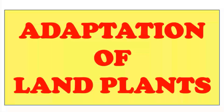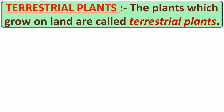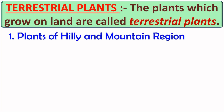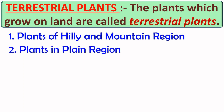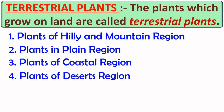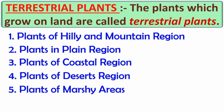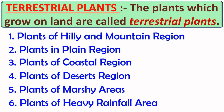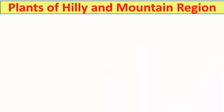First, we will see adaptation of land plants. Most of the plants grow on land and these are known as terrestrial plants. Terrestrial plants can be further classified into the following types: plants of hilly and mountain region, plants in plain region, plants of coastal region, plants of desert region, plants of marshy region, and plants of heavy rainfall area. Let's have a look at each of them one by one in detail, starting with plants of hilly and mountain region.